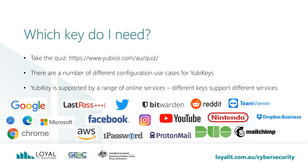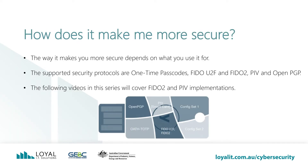These logos are a small number of supported web applications that support YubiKeys. There are some services in there that we have discussed in previous videos. The way it makes you more secure depends on what you use it for. The supported security protocols are one-time passcodes, FIDO-U2F and FIDO-2, PIV, and OpenPGP. The following videos in the series will cover FIDO-2 and PIV implementations. All of these security protocols are tried and tested and known to be absolutely secure.